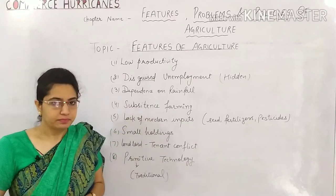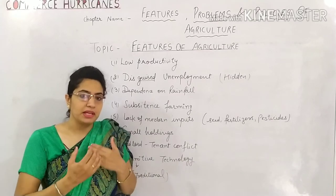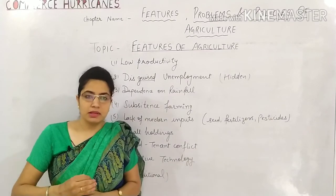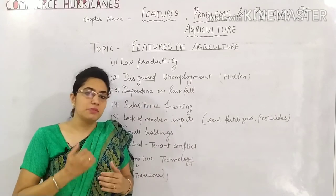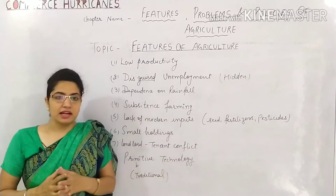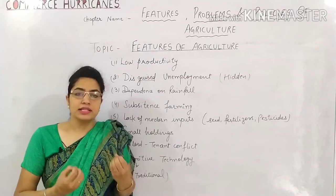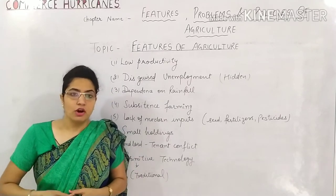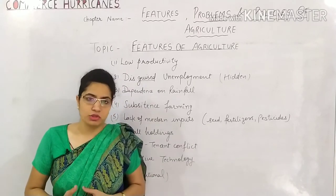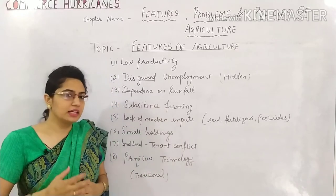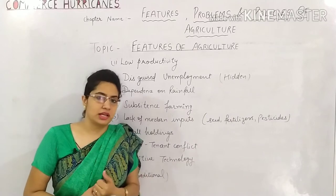Next is subsistence farming. Subsistence farming means farming that you do only for your own survival. Whatever crops are grown, you consume them yourself — you don't go to the market to sell them. There are many families in India whose land is very small. On that small piece of land, they can do only a little agriculture, and whatever is produced, they consume it themselves. Nothing is left over to sell in the market. That is why Indian agriculture is mostly subsistence farming.